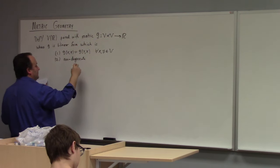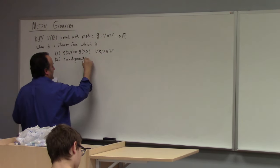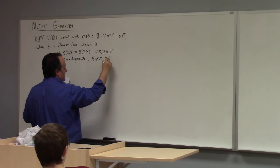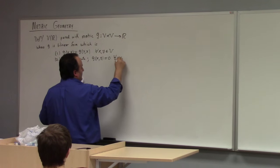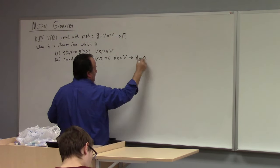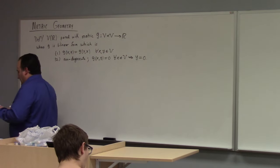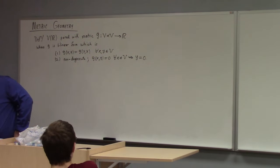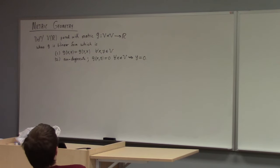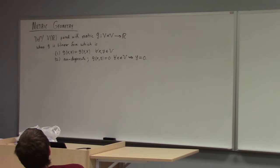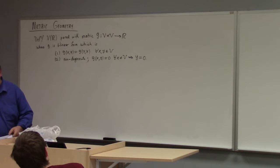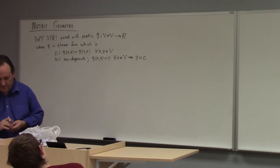The non-degeneracy means that G(x, y) = 0 for all x in V implies y = 0. Of course, you could equally well phrase non-degeneracy with respect to the other input — it doesn't really matter, because there's a symmetry between the inputs here.